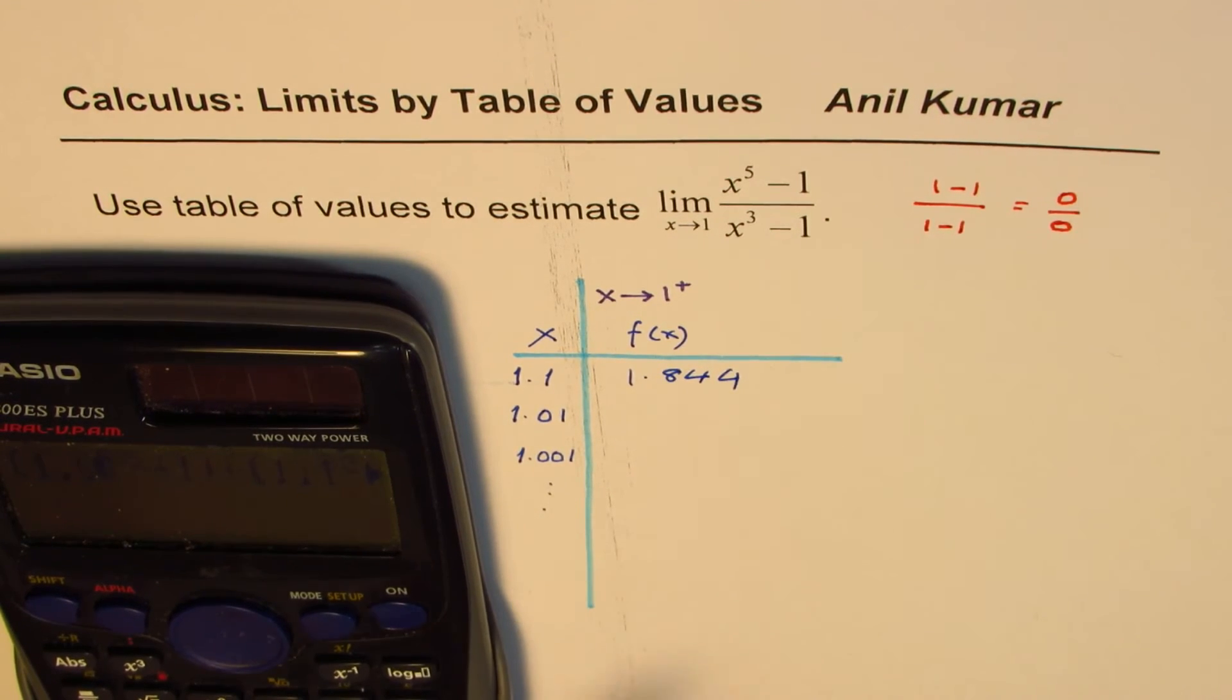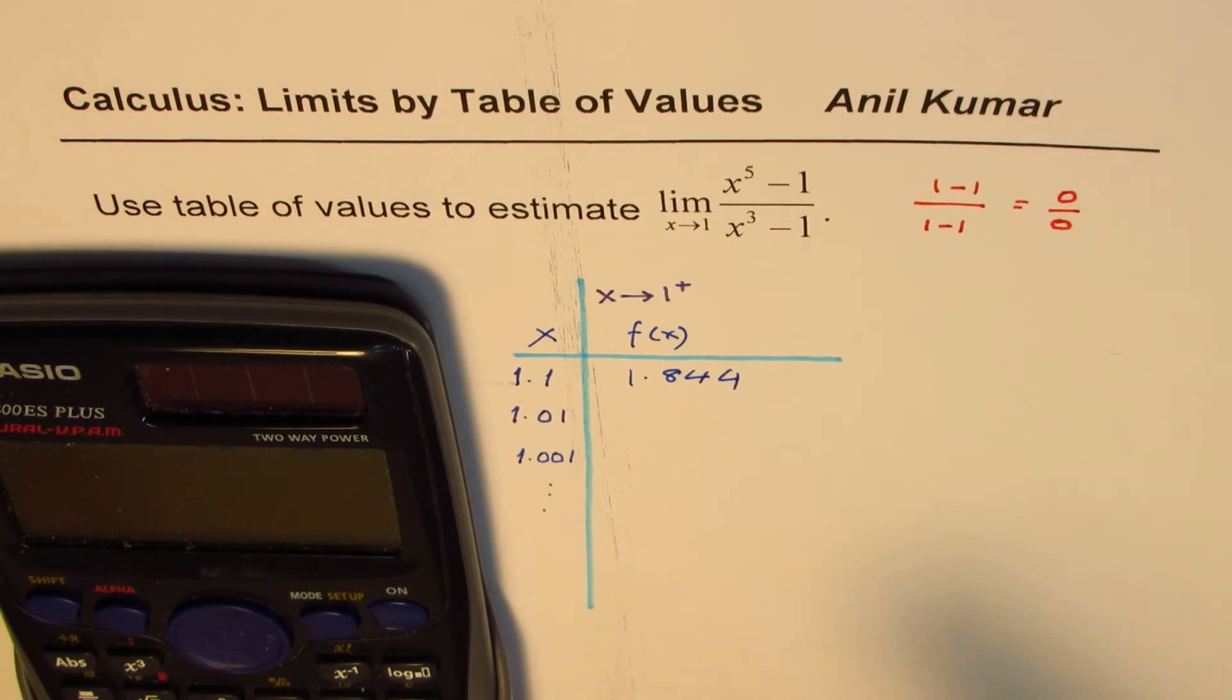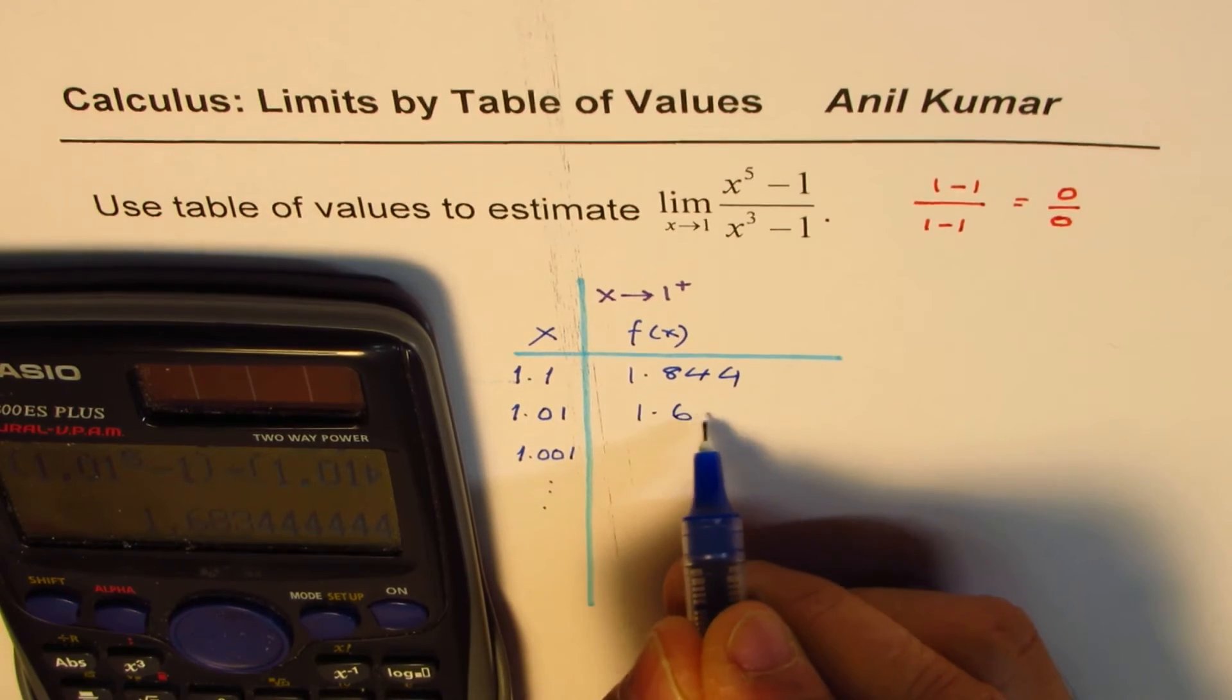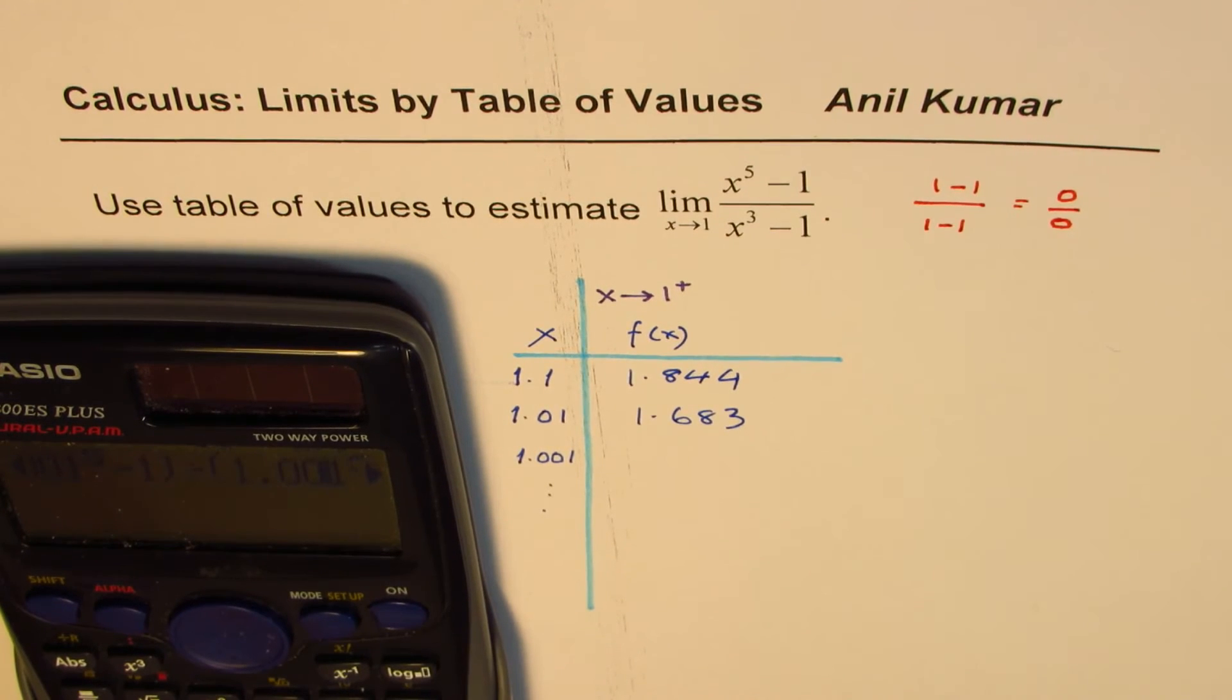Now let's change the value to 1.01. So 1.01 equals to 1.683. And now 1.001. And we'll see, are we approaching the value which we were approaching earlier from the left side?